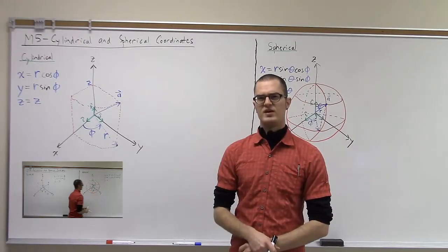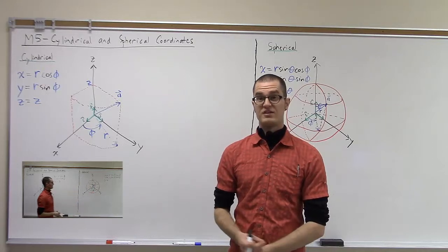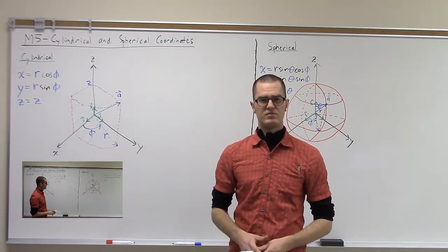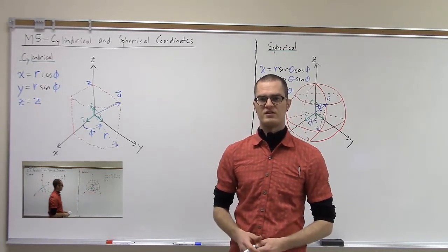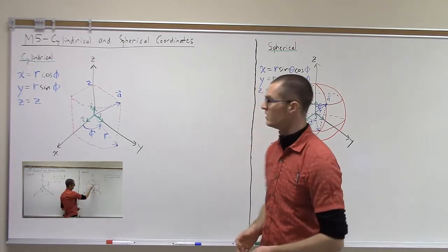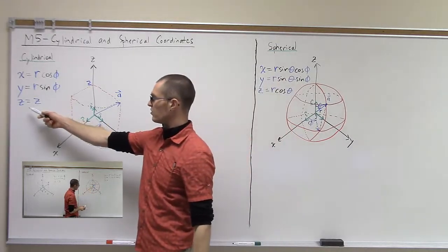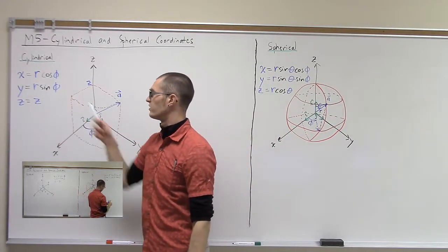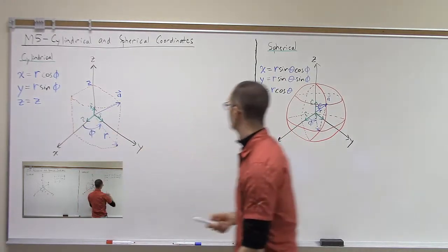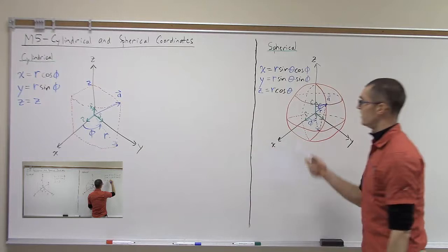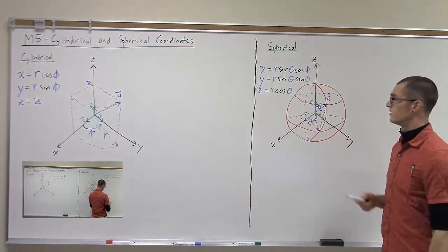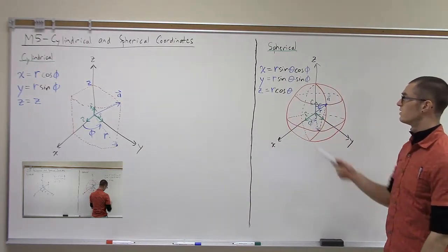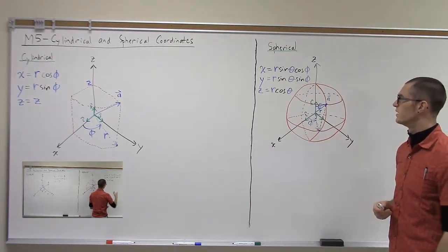In our previous video, we gave a basic definition of the cylindrical and spherical coordinate systems. We had that the Cartesian coordinates were related to the cylindrical coordinates in one way, and the spherical coordinates are related to the Cartesian coordinates in another way.